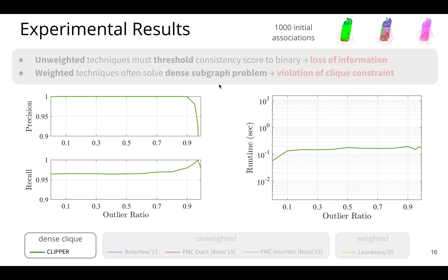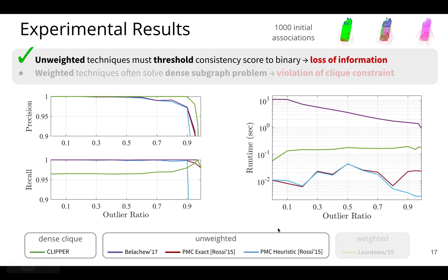So recall that the two points that we were trying to balance before a few slides ago was this loss of information and the violation of the clique constraint. So I'm going to uncover now the unweighted algorithms here. And these algorithms in this unweighted category solve the unweighted maximum clique problem.